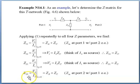For Z22, you will have V2 over I2 when I1 equals 0. In other words, your port 1 is open circuit. This will give you ZB plus ZC.